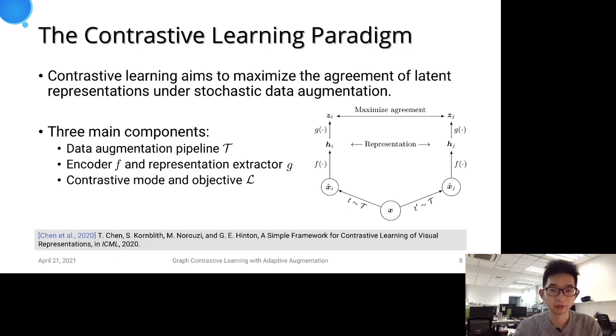There are three main components: the first one is data augmentation pipeline T, the encoder f and the representation extractor g, and the contrastive mode and objective L.